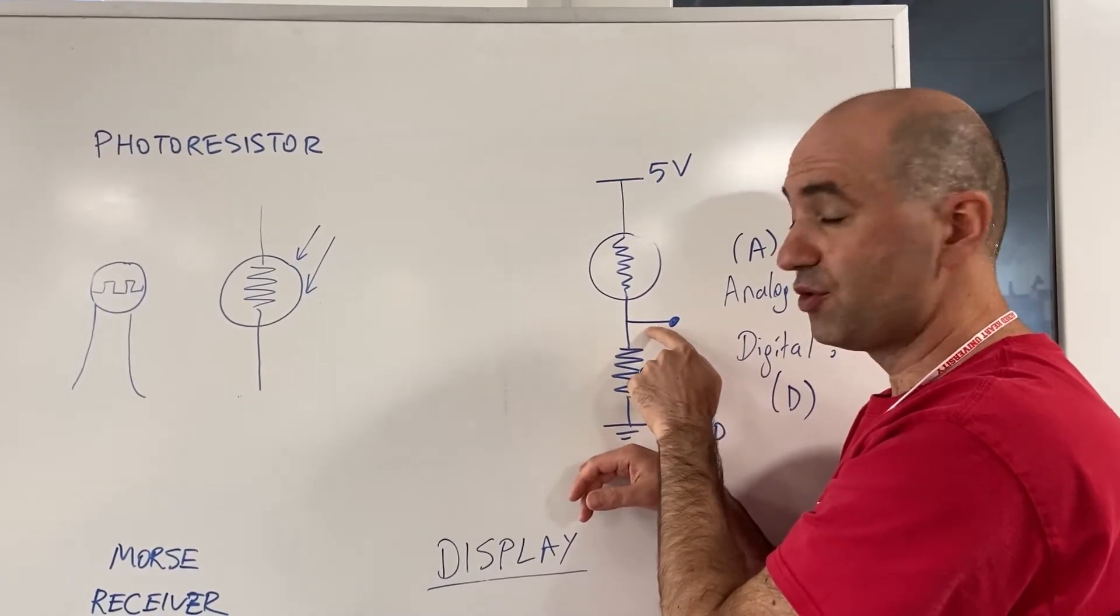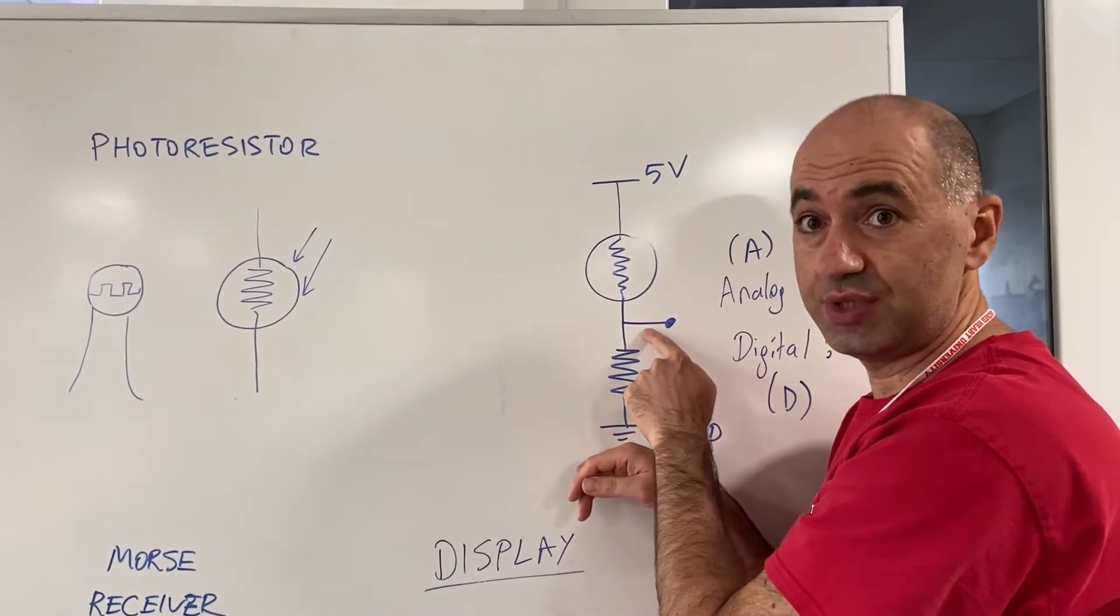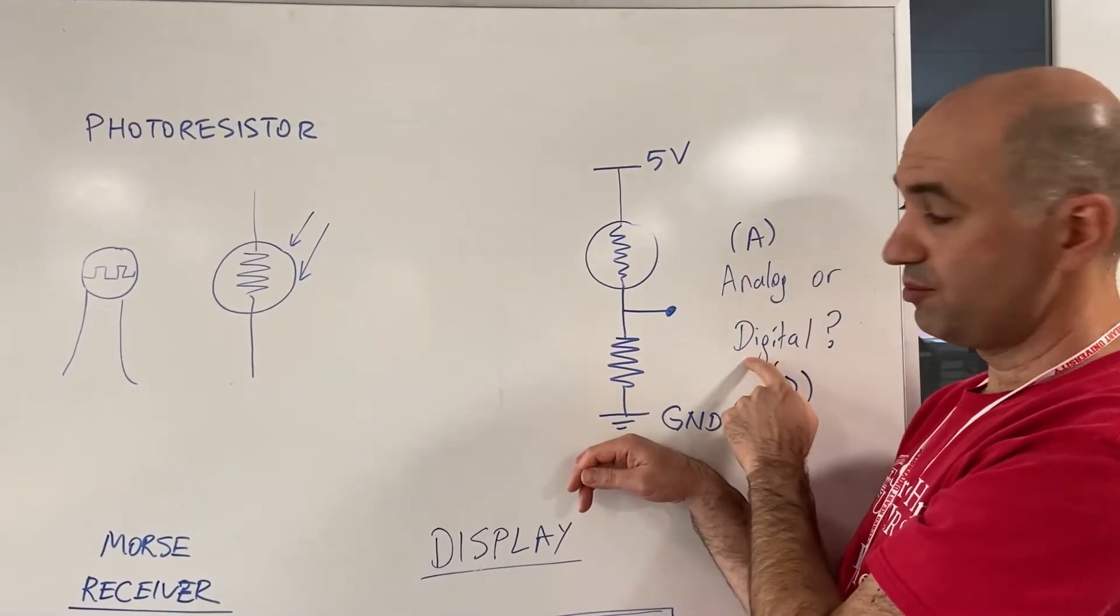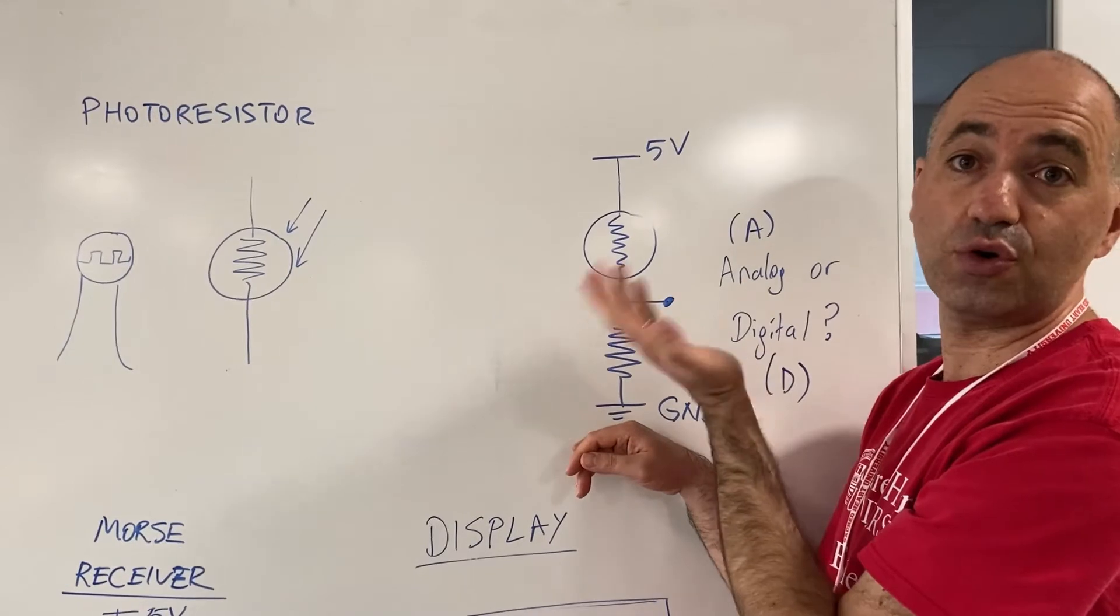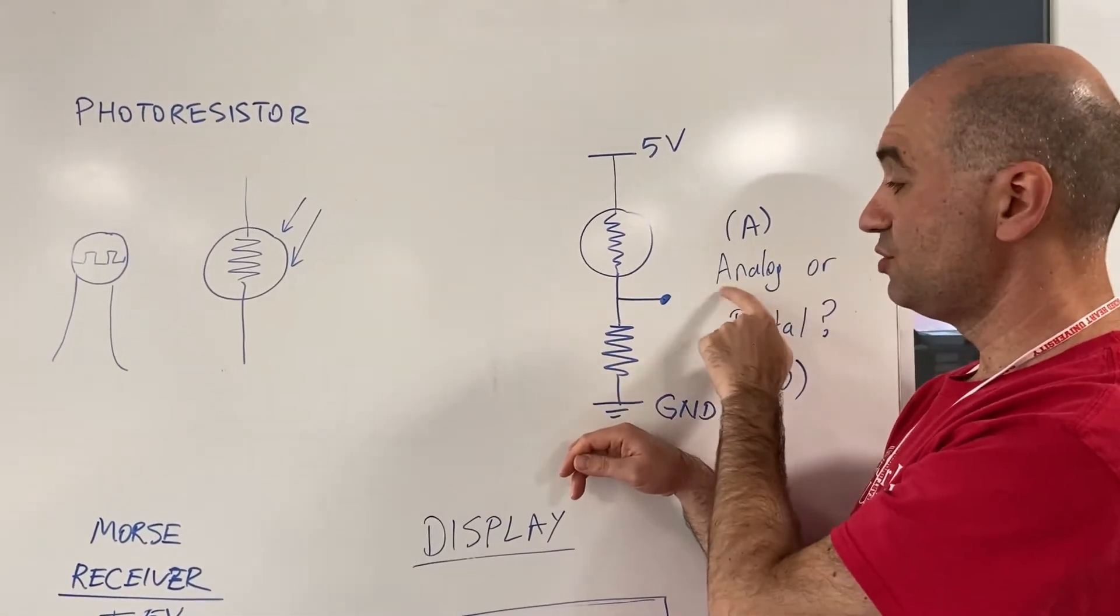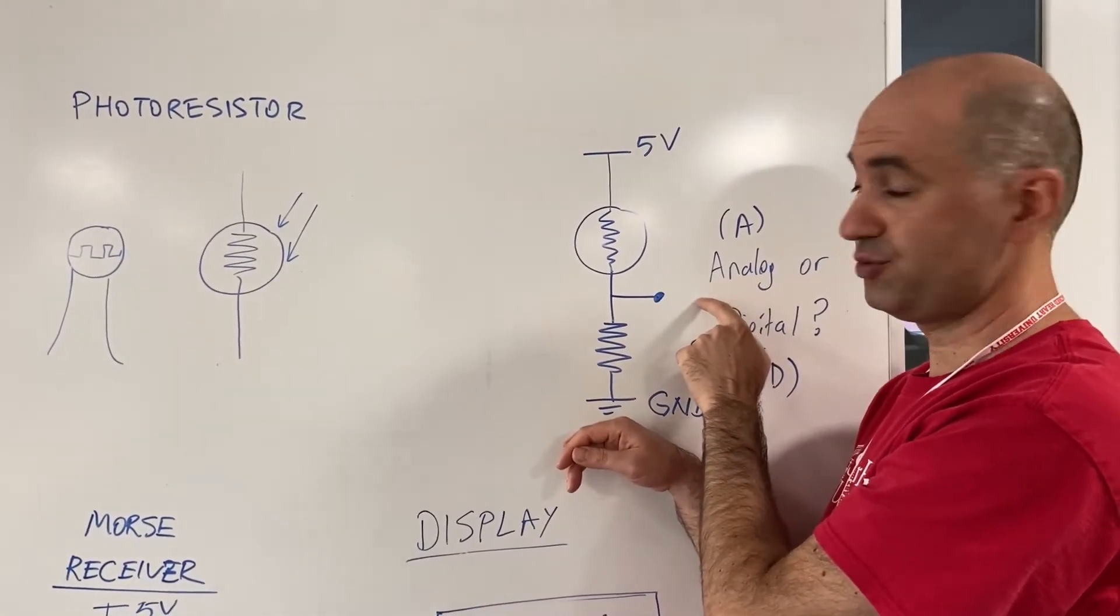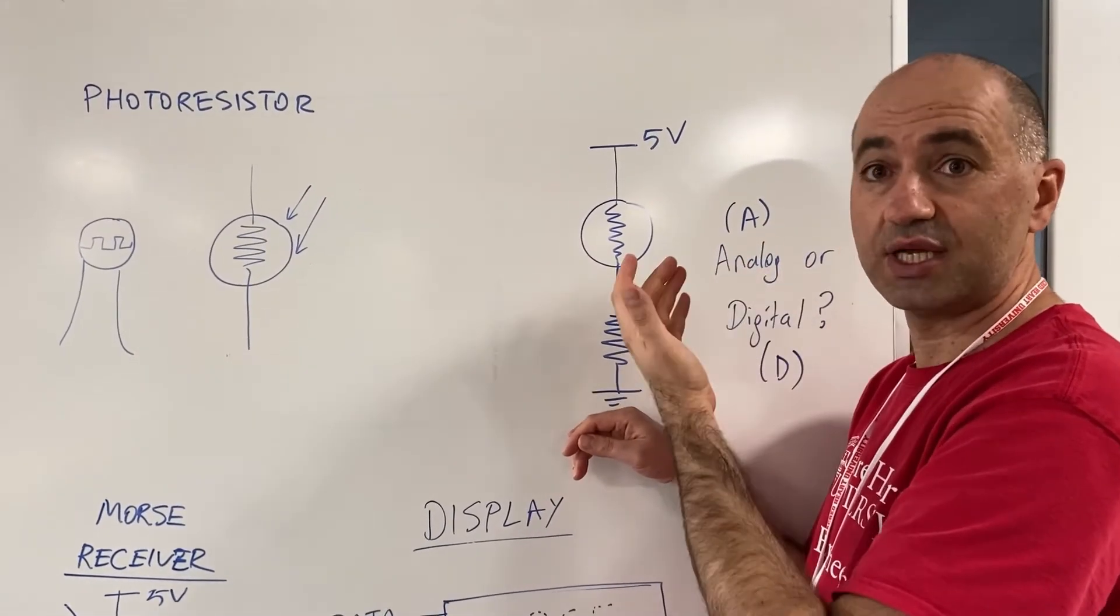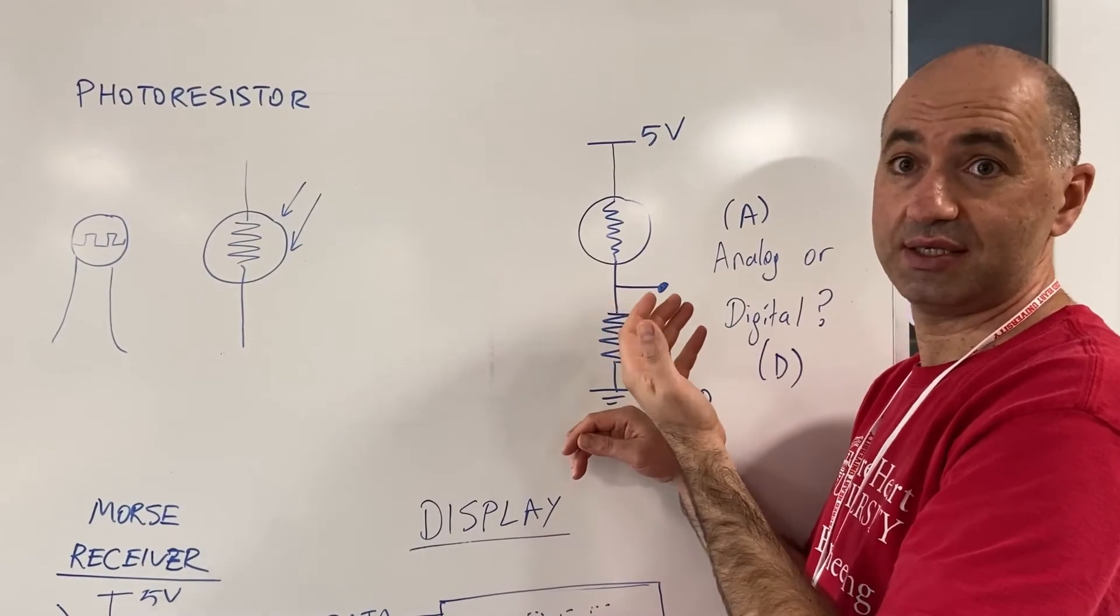We can connect this to the microcontroller to read it, but we cannot connect it to the digital port because digital can only say zero or one. That's why we use this and connect this to the analog port of the microcontroller, so we know exactly what that value is and connect it to how much light that is.